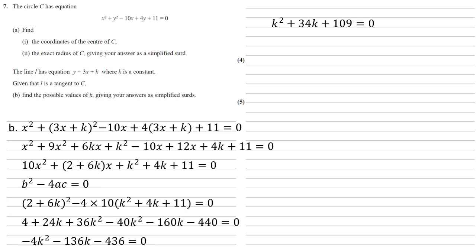Dividing through by negative 4 gives k squared plus 34k plus 109 equals 0. You can now solve this whichever way you like - completing the square, quadratic formula, up to you. I put it into the quadratic solving function on the calculator, and this gives answers of k equals minus 17 plus or minus 6 root 5.